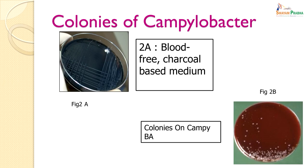Colonies of Campylobacter after 48 hours are about 2 to 3 millimeters in size. The first picture shows a blood-free charcoal-based medium with very tiny colonies on the surface. The second picture shows Campylobacter blood agar with no haemolysis and slightly irregular colonies on the surface of the medium.